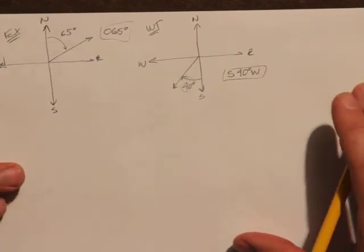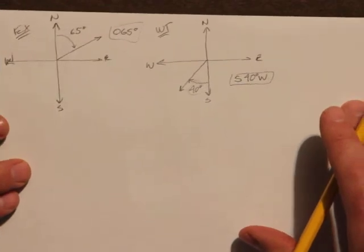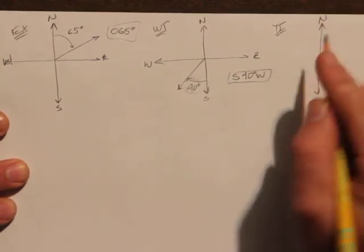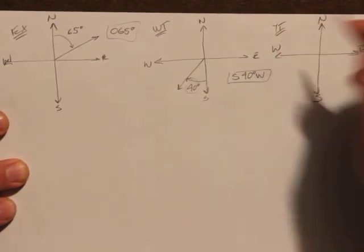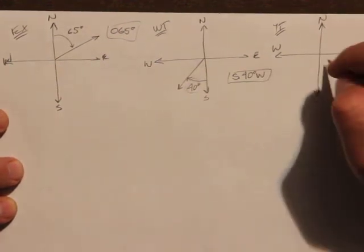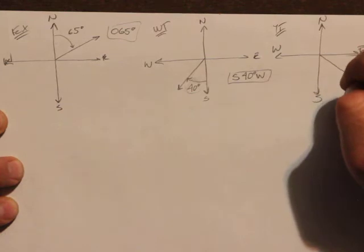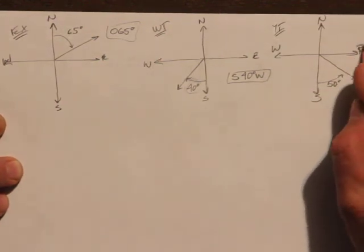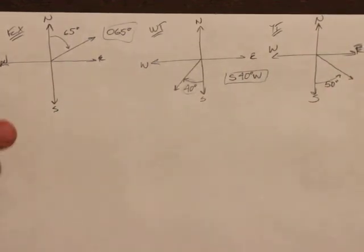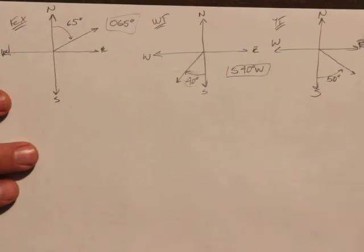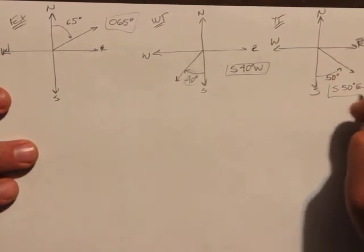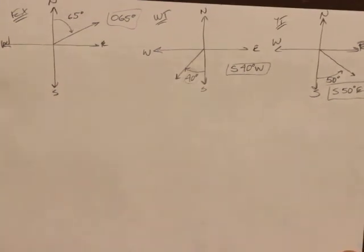Now let's have you do one by yourself. We have 50 degrees from south to east. Pause it and try the work. Welcome back — hopefully you paused. I've got south, I go 50 degrees east, so the answer is south 50 degrees east.